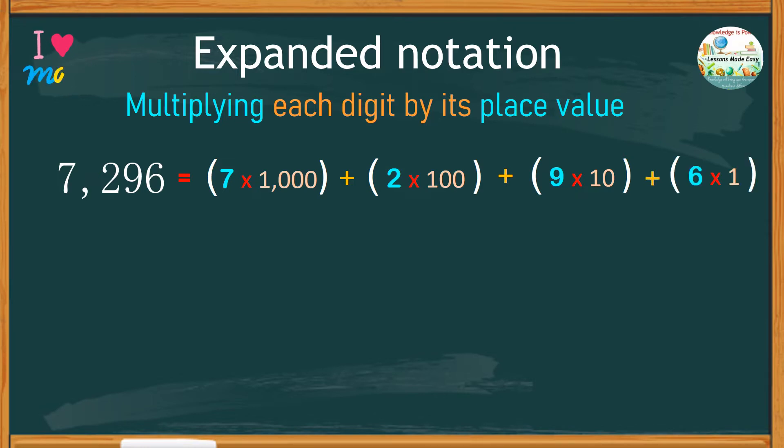It's too easy, isn't it? Now, let's try expanding the decimal number 0.4185.